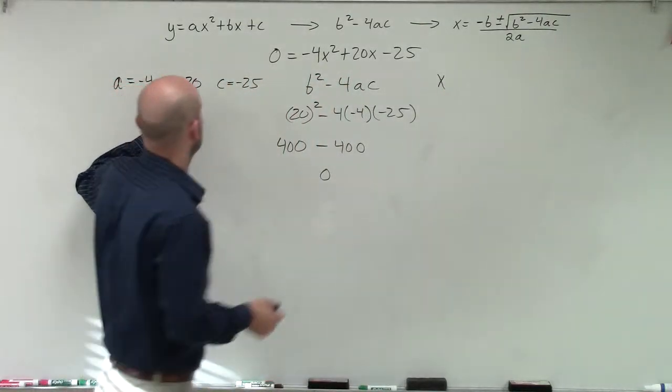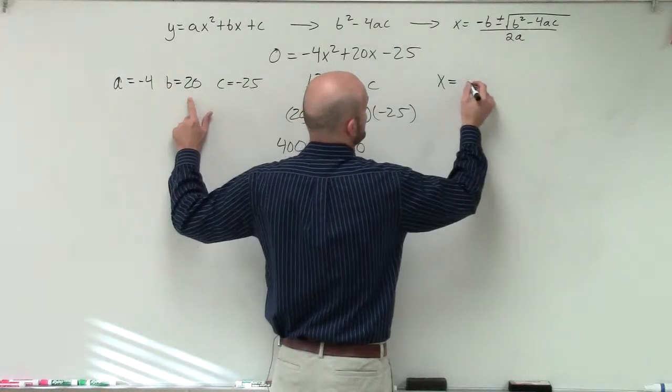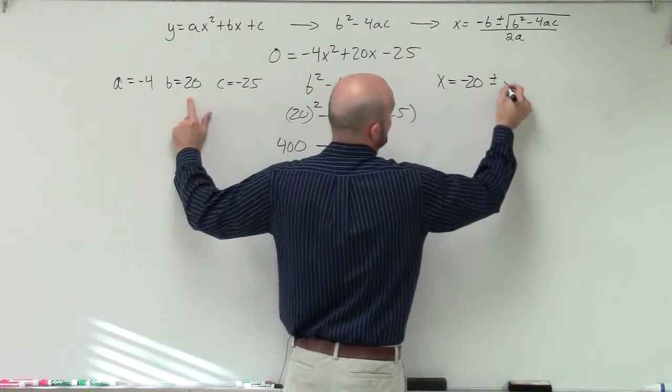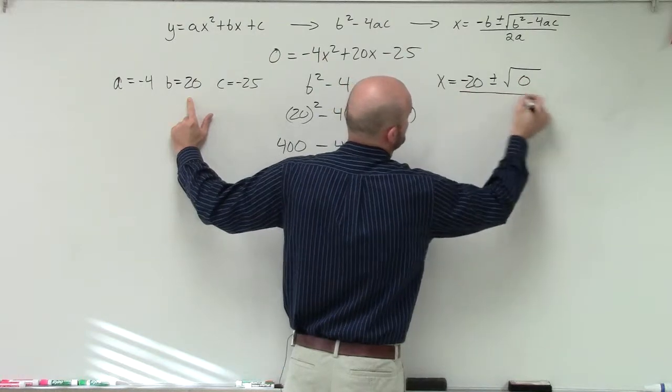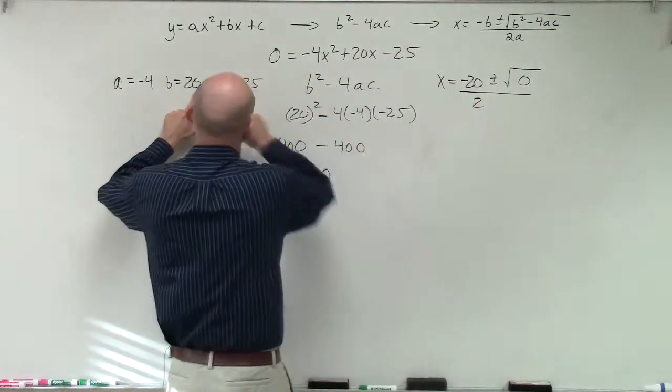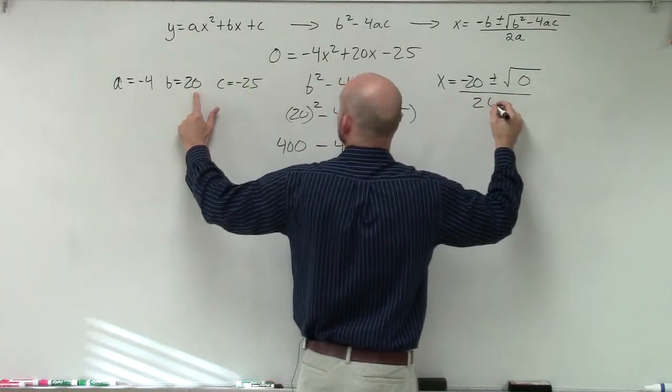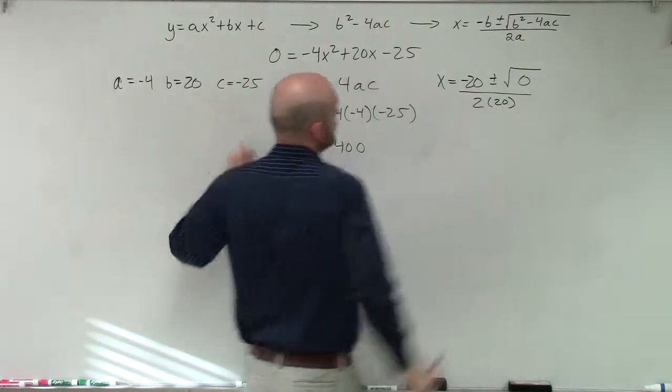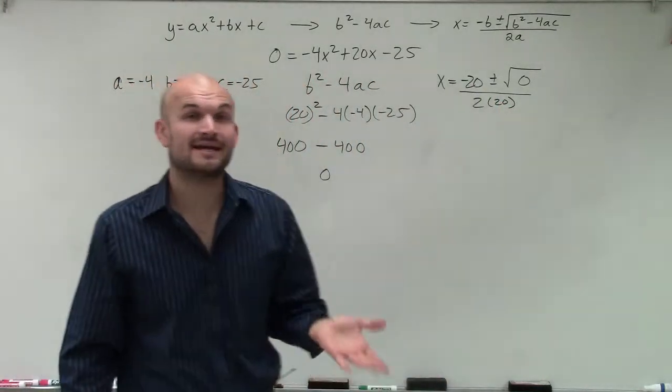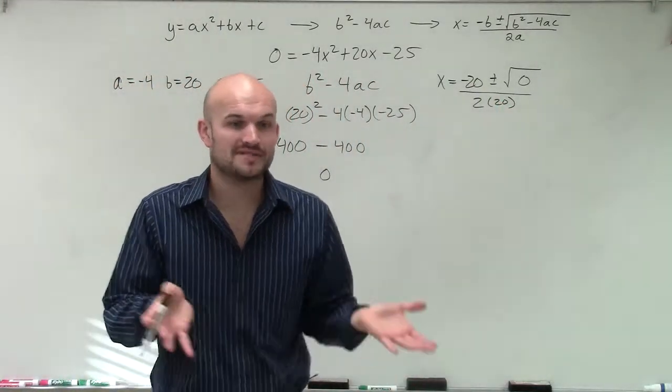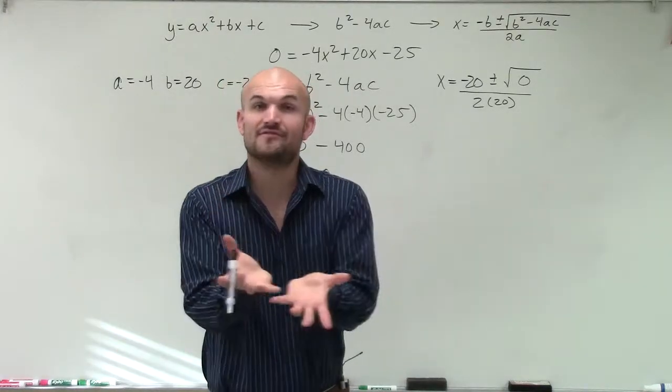Therefore, I have negative b or opposite of b. So that's going to be negative 20 plus or minus the square root of 0 divided by 2 times 20. Well, the square root of 0 is going to be 0. And plus or minus, there is no positive or negative value of 0. So we're just going to have the value 0.